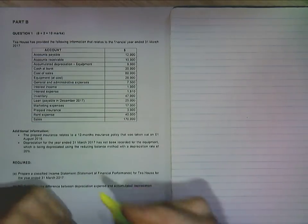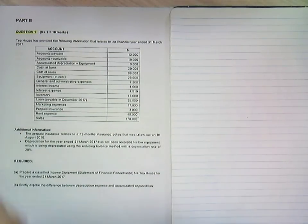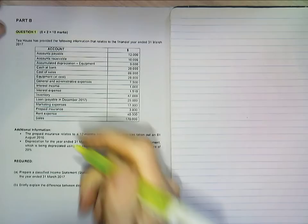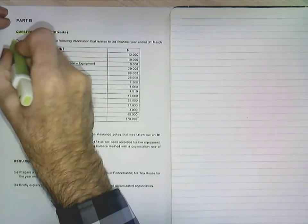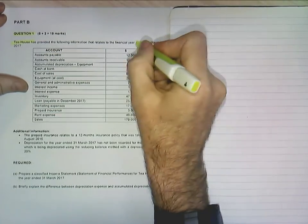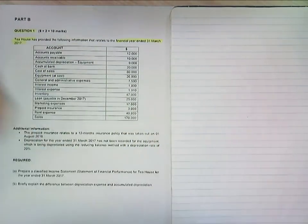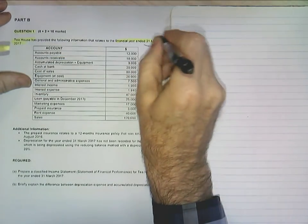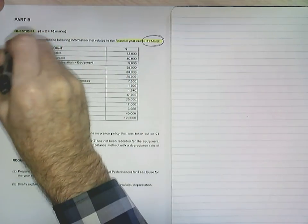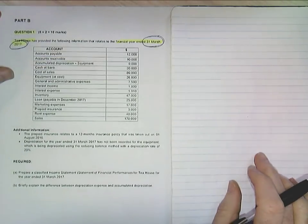Alright, we're looking at question number one of the 2018 exam paper, I think it's 2017 exam paper, but that's okay. And it's from T House, and they've provided the following information which relates to the financial year ended the 31st of March 2017. Now, I'll give you one bit of advice, always pay attention to dates, because dates are important. This is accounting, so we account for dates as well.